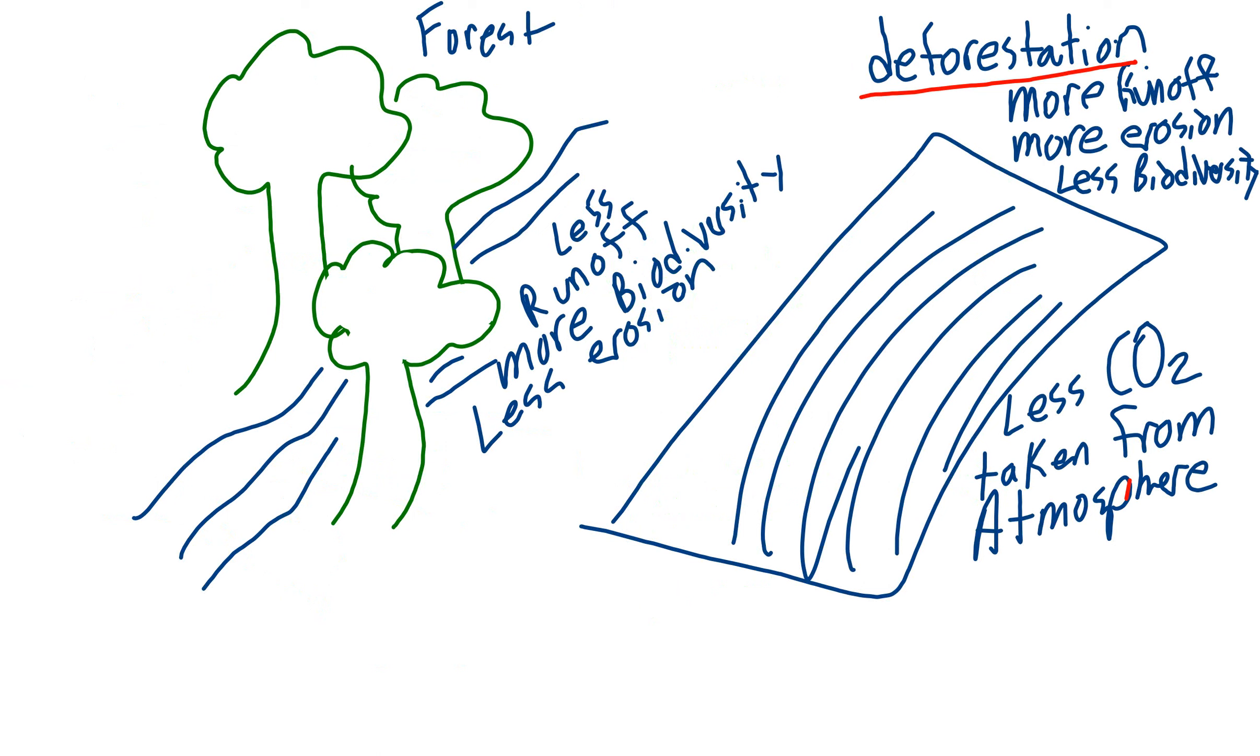We cut down trees, so there's less trees, less squirrels, less birds. So there's less biodiversity. And because now there are fewer trees in the world, less CO2 is taken out of the atmosphere. So deforestation increases runoff, increases erosion, decreases biodiversity, and increases the CO2 in the atmosphere.